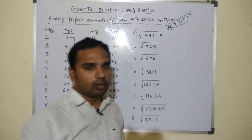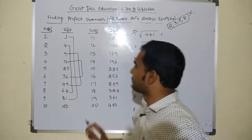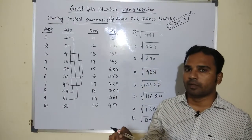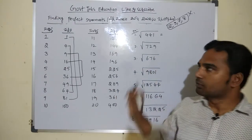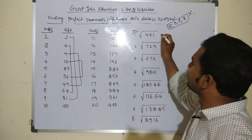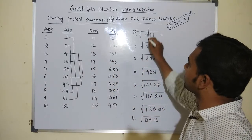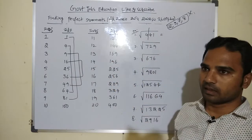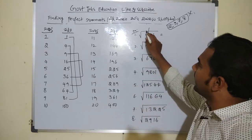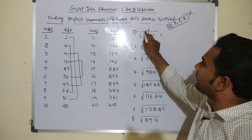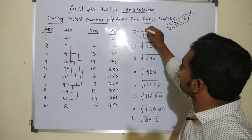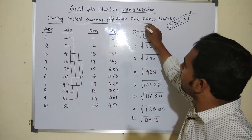Now we will find the square root process. We separate the number into two parts: the left side and the right side. We use the perfect square for the left side to find the square root.